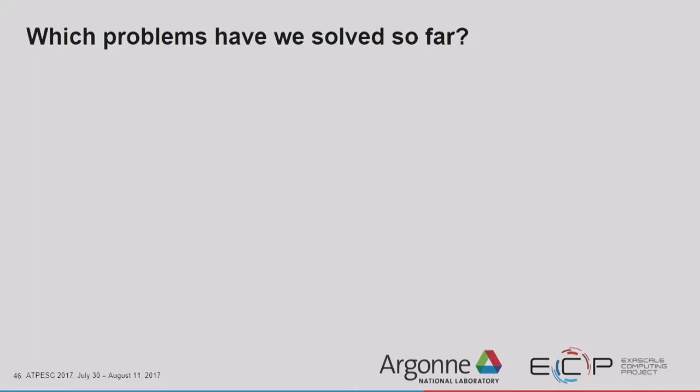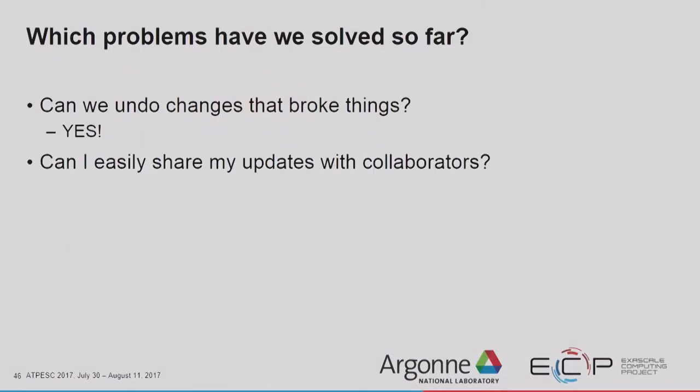Which of grad school Alicia's problems have we solved? Can we undo changes that broke things? If I accidentally `rm -r /*`, technically I couldn't because I deleted the repository too — but if I just remove things in my current directory without removing the repository, yes, we fixed that. Can I easily share updates with collaborators using my local Git repository? That's still pretty hard because it's still on my machine specifically. Can I easily synchronize across three machines? Not really yet. Is my code protected from spontaneous combustion? No — this repository is still on my computer.